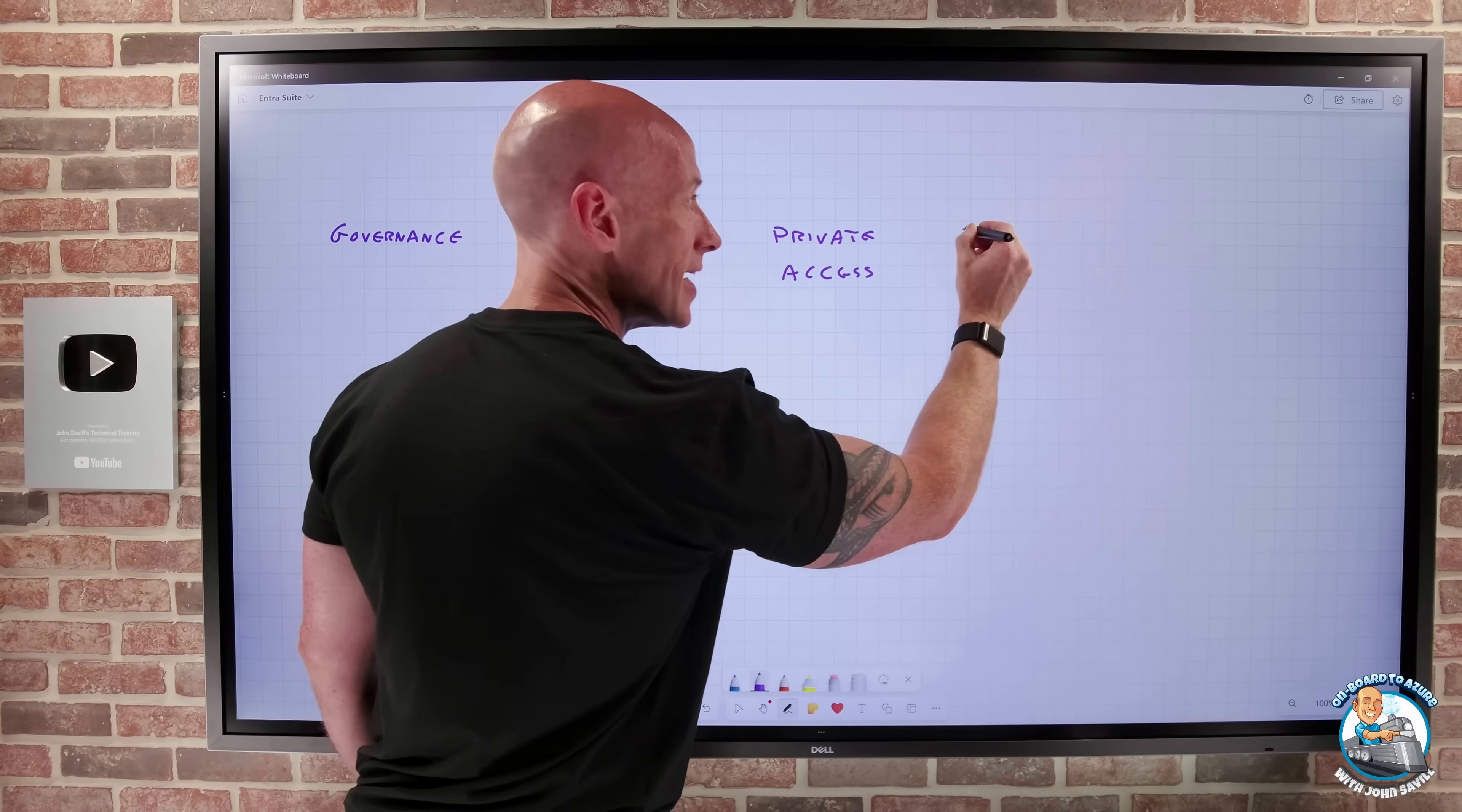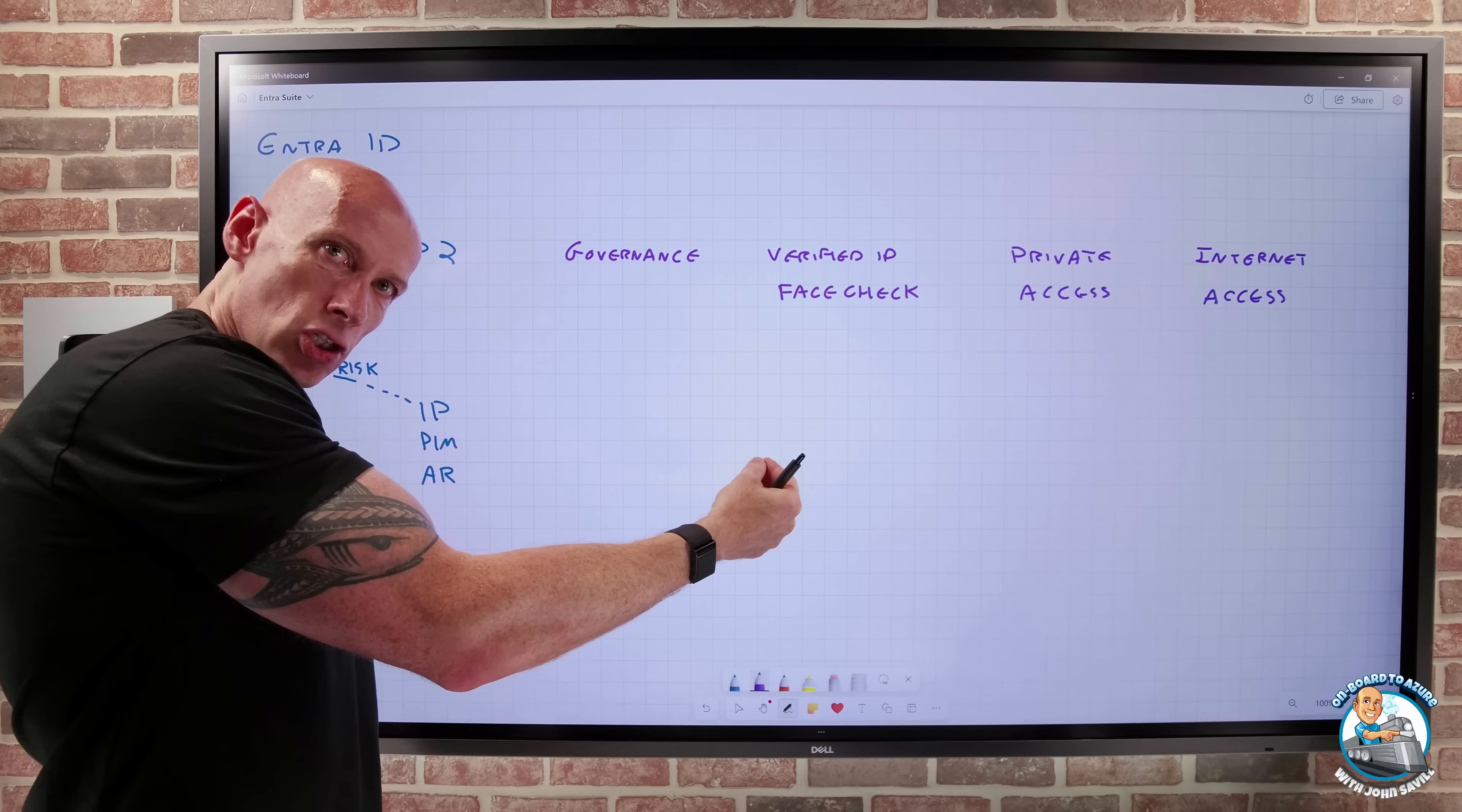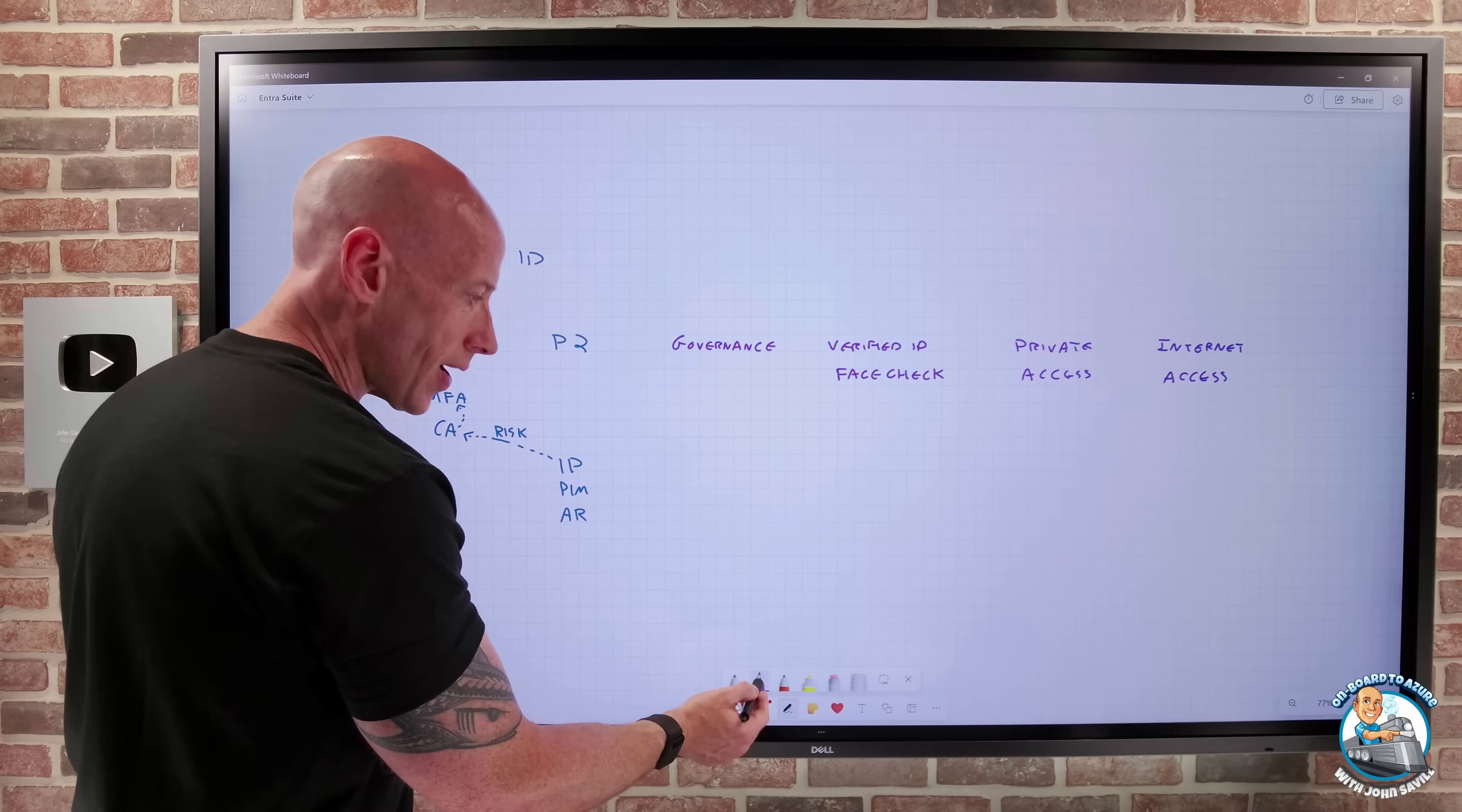And then also there was internet access, which, as the name suggests, helps protect the users when they're using those internet-based resources. Again, I get a tunnel to that secure service edge of ENTRA. I can then use conditional access. I can define categories of applications. I can use fully qualified domain names. But it's all about adding protection to the user. And for all of these, these were available as separate licenses.